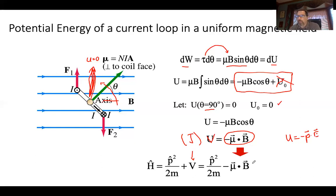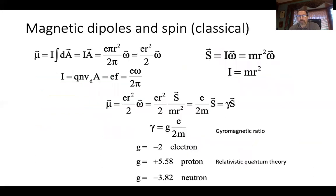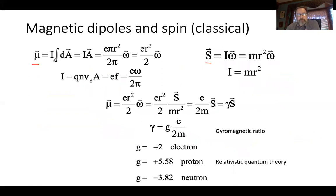That's the new Hamiltonian for a dipole in a magnetic field. I want to come up with a classical relationship between the spin we've been talking about and this dipole. The dipole is a current times an area.